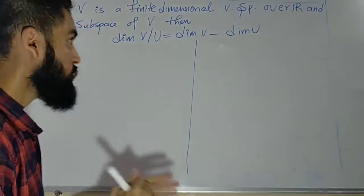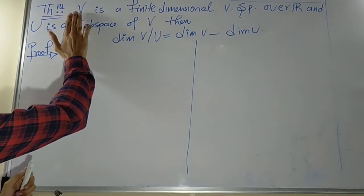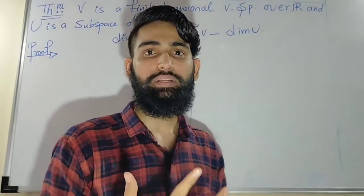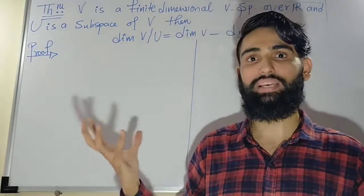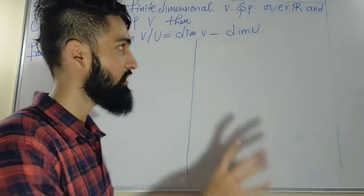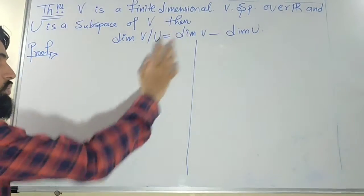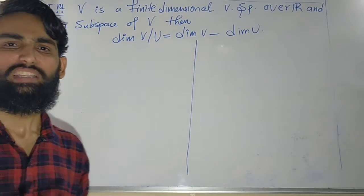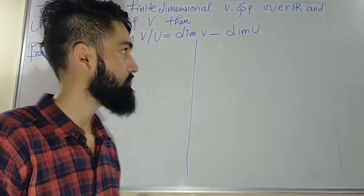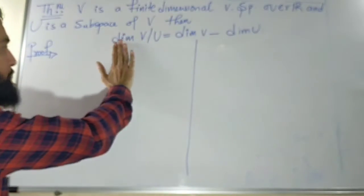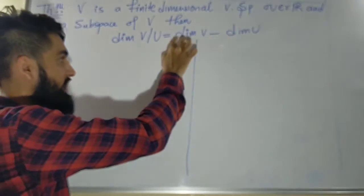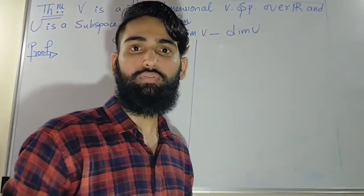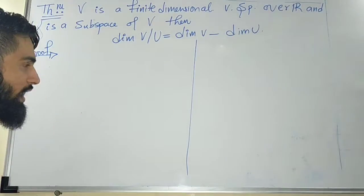So the theorem is: if V is a finite dimensional vector space — finite dimensional means it has a basis with finitely many elements — V is a finite dimensional vector space over a field F, and U is a subspace of V, then the dimension of V by U is the same as dimension of V minus dimension of U.